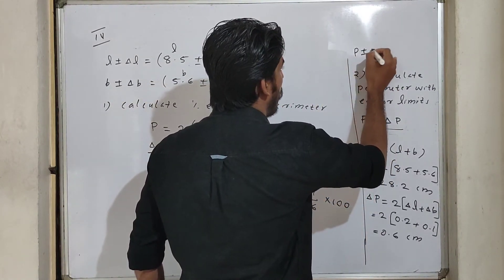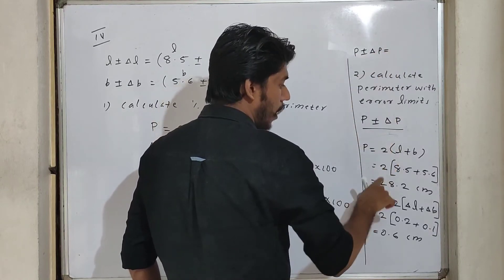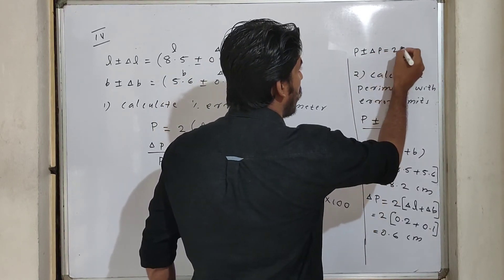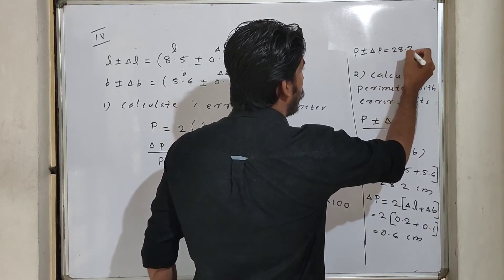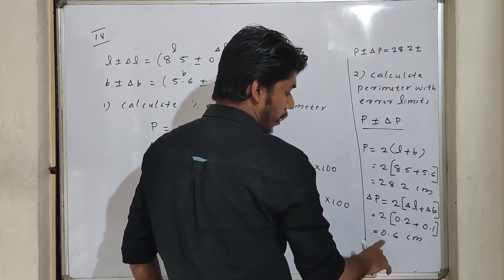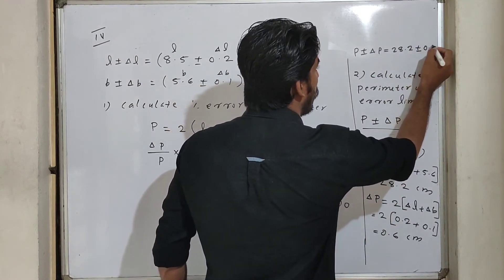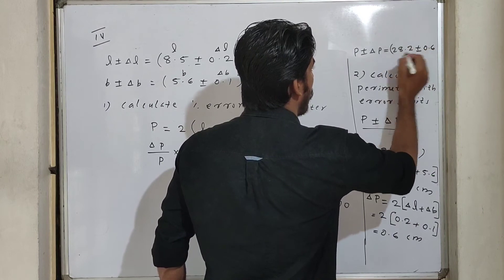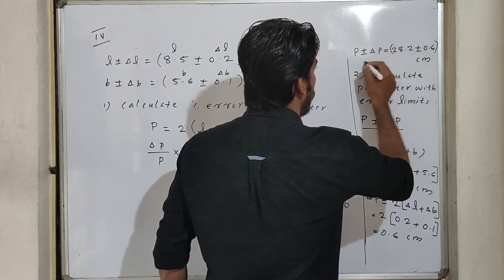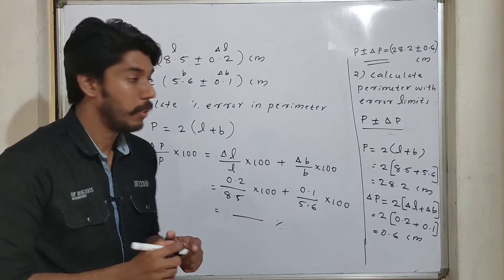P plus or minus delta P is equal to 28.2 plus or minus 0.6 centimeter. That is the perimeter with the error limit.